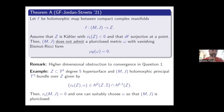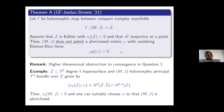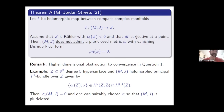A question from the audience: do these threefolds have trivial canonical bundle? No — the first Chern class is zero in de Rham but not as a line bundle. In fact, if there were a holomorphic volume form, then having a pluriclosed metric with vanishing Bismuth Ricci form would automatically imply the metric is Kähler — that's a classical result.